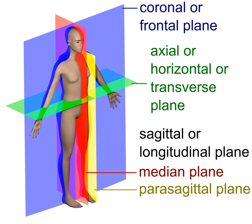When describing anatomical motion, these planes describe the axis along which an action is performed. So by moving through the transverse plane, movement travels from head to toe. For example, if a person jumped directly up and then down, their body would be moving through the transverse plane in the coronal and sagittal planes. A longitudinal plane is any plane perpendicular to the transverse plane. The coronal plane and the sagittal plane are examples of longitudinal planes.